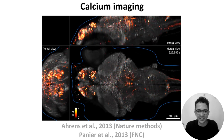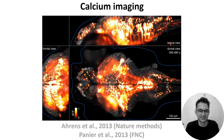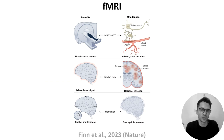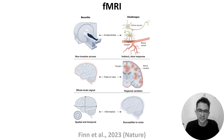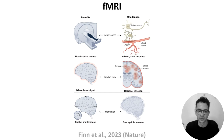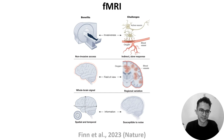So how can we image neural activity in humans? One of the most commonly used methods is functional magnetic resonance imaging, or fMRI, which measures changes in blood flow through regions of the brain. As more active areas require more oxygen, and vice versa, this serves as another proxy for neural activity. fMRI is widely used as it's non-invasive — we don't need to implant electrodes or inject dyes into subjects. It provides whole-brain information, and it has reasonable spatial and temporal resolution, on the order of millimetres and seconds.